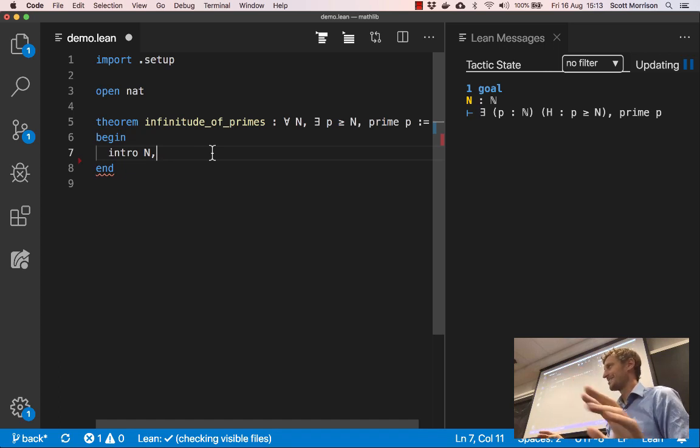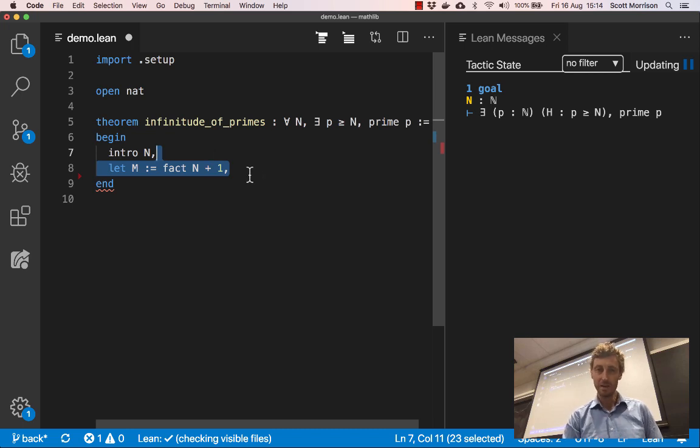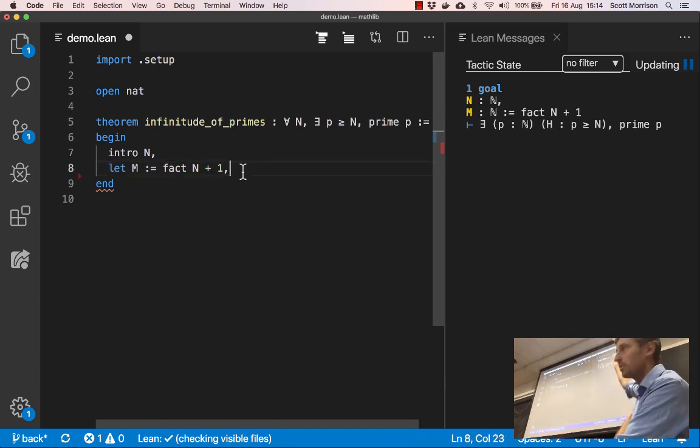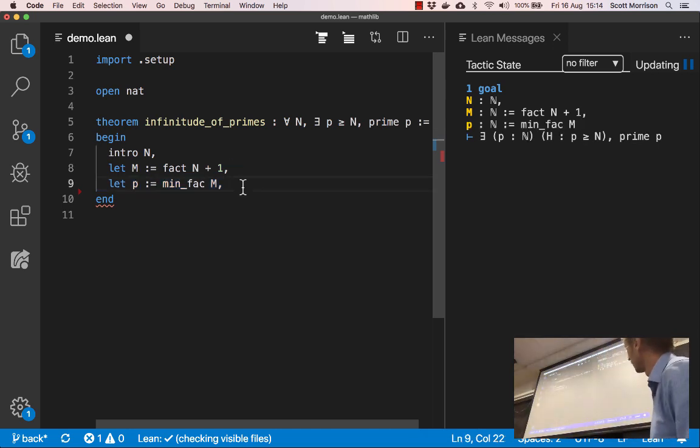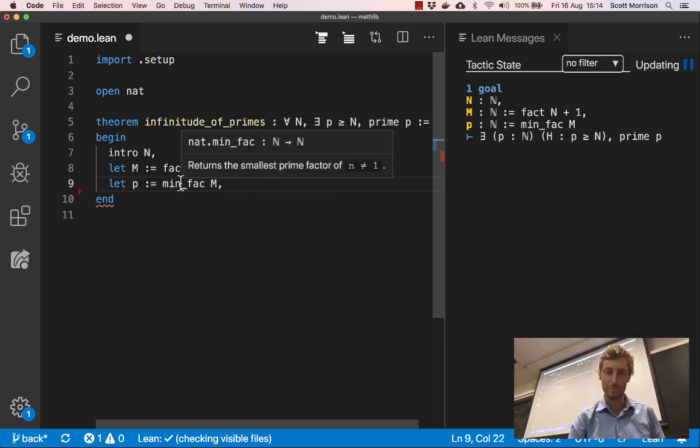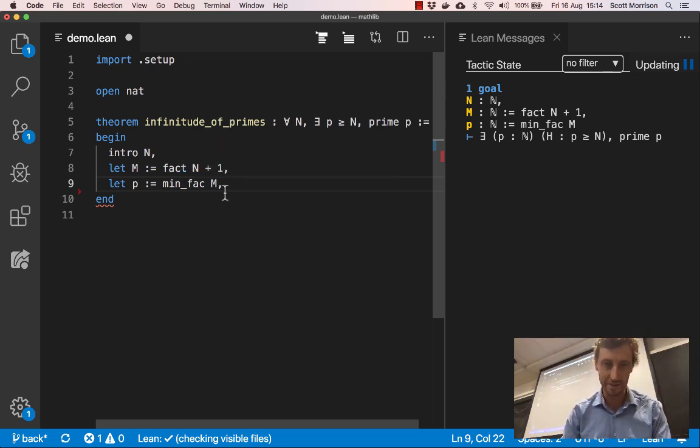So it's titled tactic state. It says we've got one goal. And that goal is pretty much exactly the goal that we said we're setting up to prove. For all natural numbers n, there exists p a natural number and a proof, which the computer decided to call h, a proof that p is greater than equal to n such that that number p is prime. Okay, so what do we do? Well, the very first thing we do as mathematicians, we would say, let n be a natural number. Okay, and in this particular theorem prover, we write that by writing intro n. And I'm going to click the cursor to the right of that line now. And what you'll see is that the goal will update.